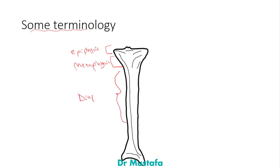The same terminology applies to the other end of the bone. Proximal means the part of the bone nearer to the body center — for the tibia, the upper part is proximal. Distal refers to the part further from the body center. Regarding bone composition, the epiphysis and metaphysis are mostly composed of cancellous bone, while the diaphysis is mostly composed of cortical bone.